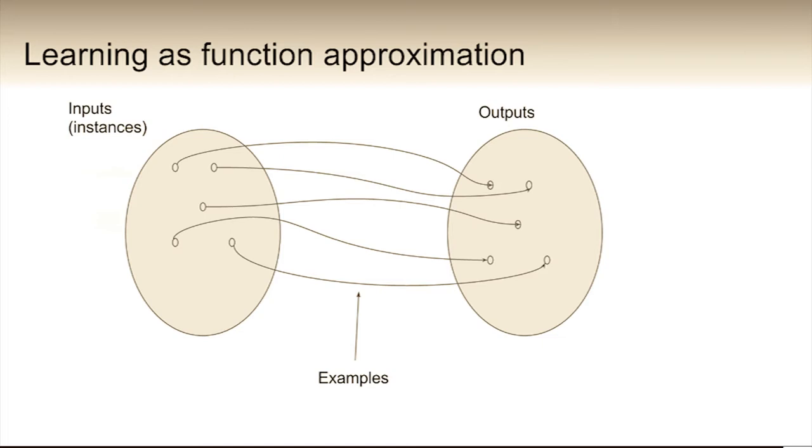So in general, in machine learning, you're searching for a hypothesis, which is the function that maps from inputs to outputs. And the algorithms that you use are going to define what the set of hypotheses are that you search for.